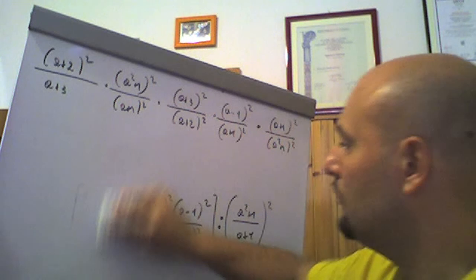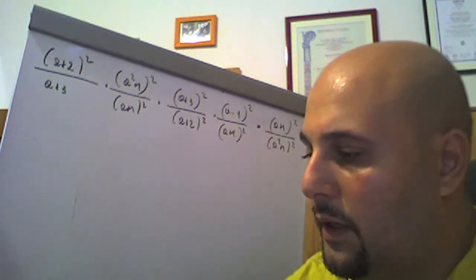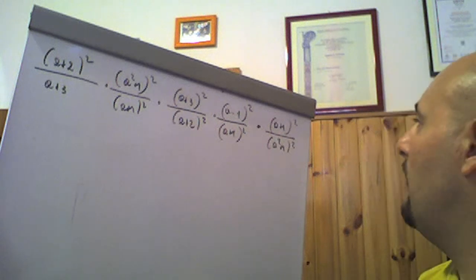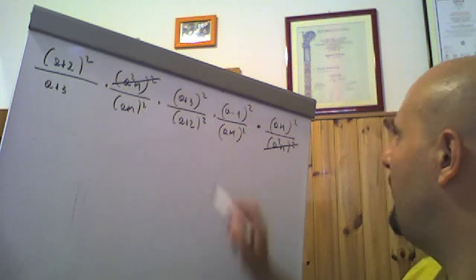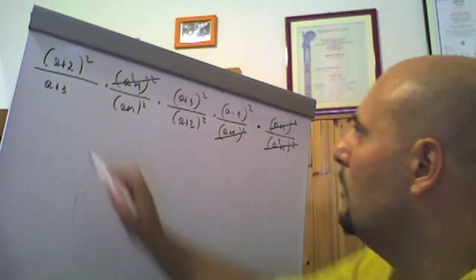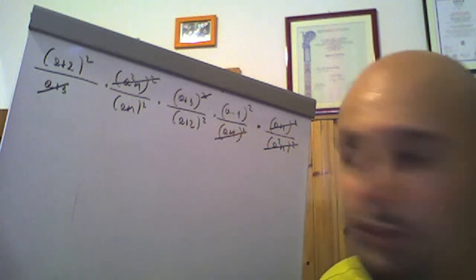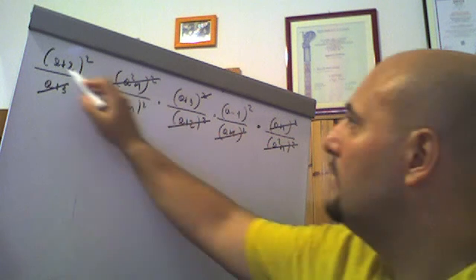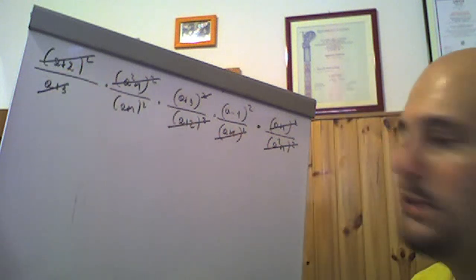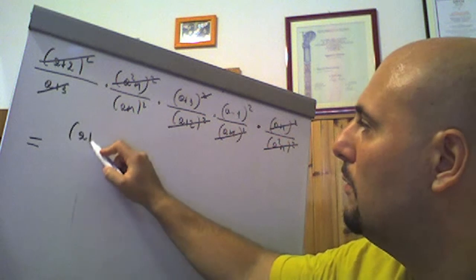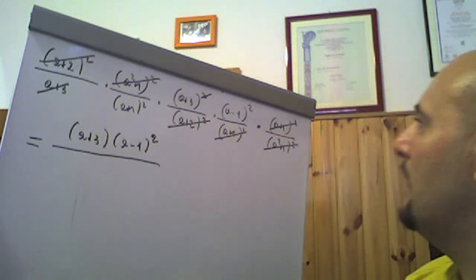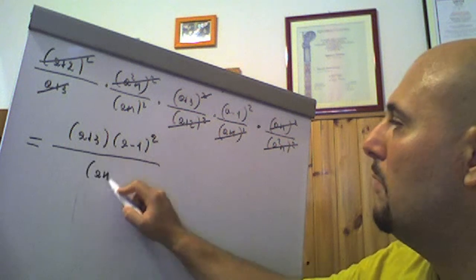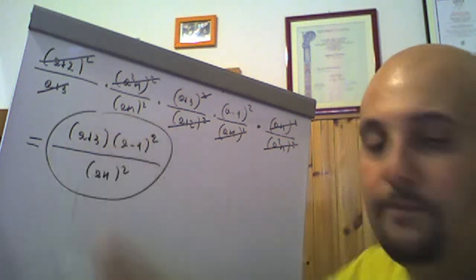Detto questo, andiamo a semplificare quello che si può semplificare. Allora: (a quadro più 1) al quadrato si semplifica con questo. Noi abbiamo un (a più 1) al quadrato che si semplifica con questo. Un (a più 3) che si semplifica con uno di quei due (a più 3) che stanno là. E (a più 2) al quadrato si semplifica con (a più 2) al quadrato. Vediamo cosa è rimasto: al numeratore è rimasto un (a più 3) per un (a meno 1) al quadrato. Al denominatore è rimasto un solo (a più 1) al quadrato. E dunque questo è il risultato della nostra espressione.